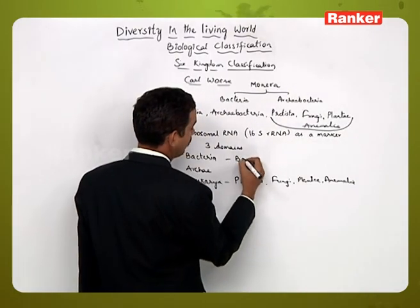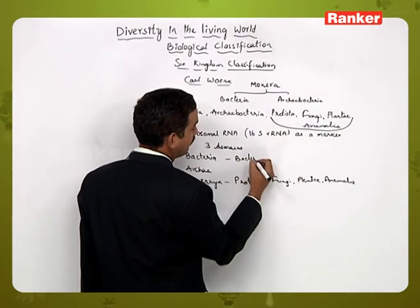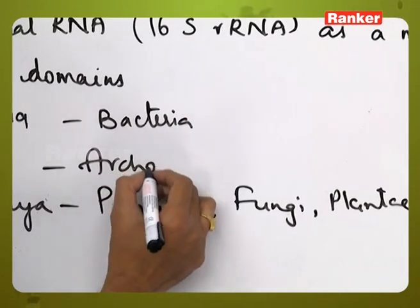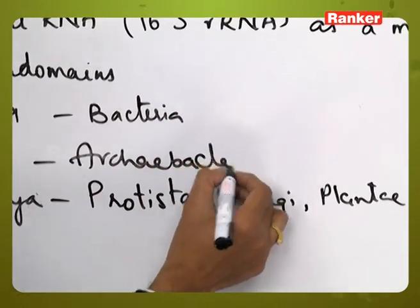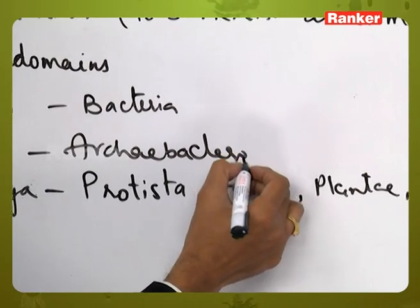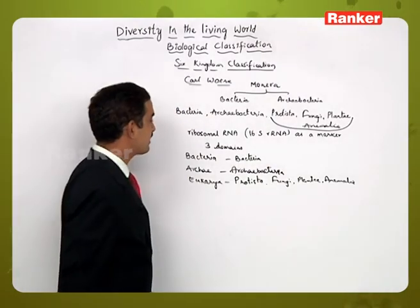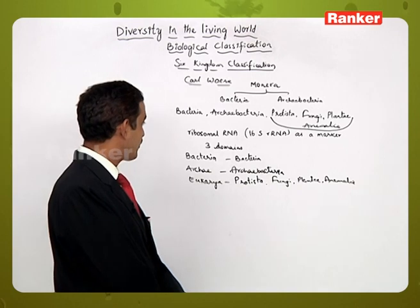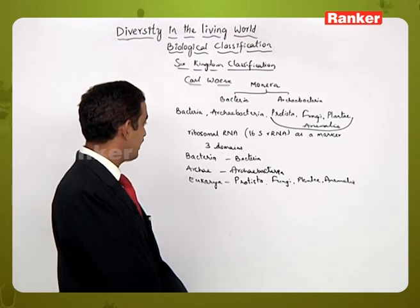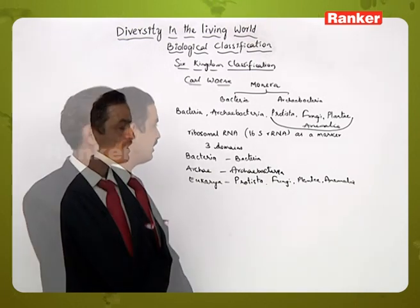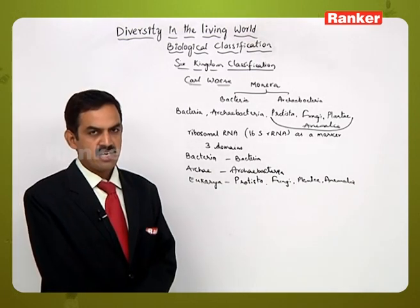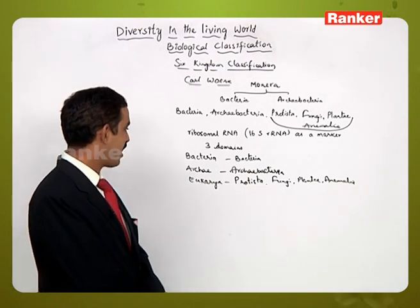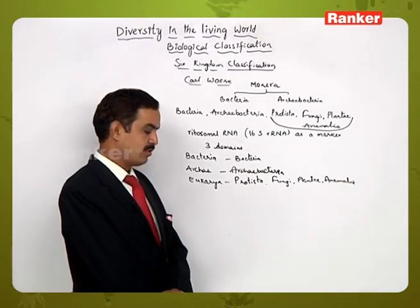So domain Bacteria contains only the kingdom Bacteria, and domain Archaea contains Archaebacteria. This is how the six kingdom classification is divided into three domains — Bacteria, Archaea, and Eukarya — based on the 16S rRNA as a marker.